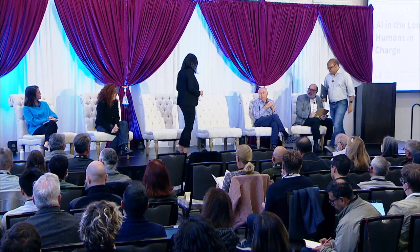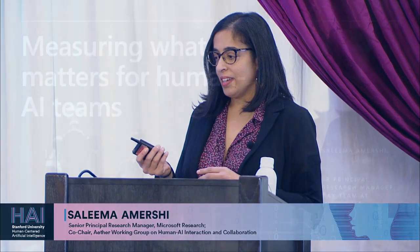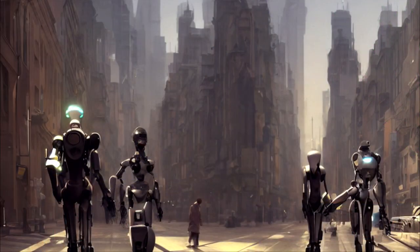Thank you Manish. Now we have Salima. I'm going to talk about measuring what matters for human-AI teams. What's slowing progress is that when we evaluate our AI systems, we're not measuring the loop — we're asking what these models can do, but we really need to be asking what people can do with these models.